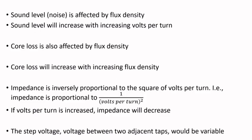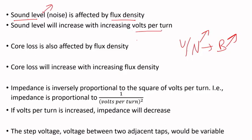Sound level and noise are also affected by flux density. Since volts per turn is changing, flux density depends on it — if volts per turn goes up, flux density goes up, and noise increases. Core loss is similarly affected by flux density: if volts per turn increases, flux density increases, and core loss increases as well.